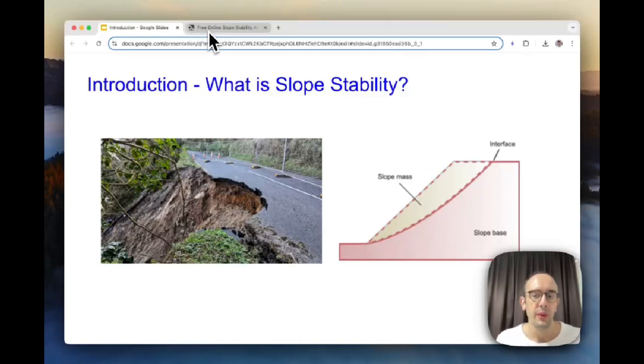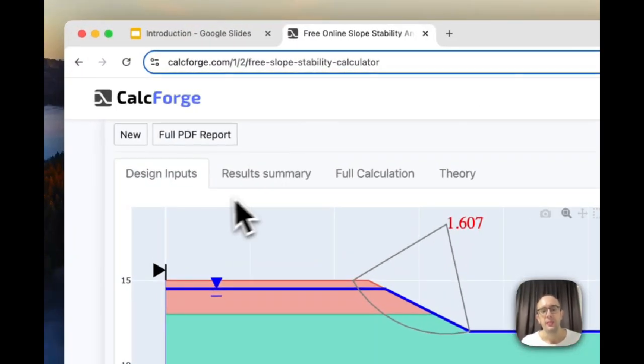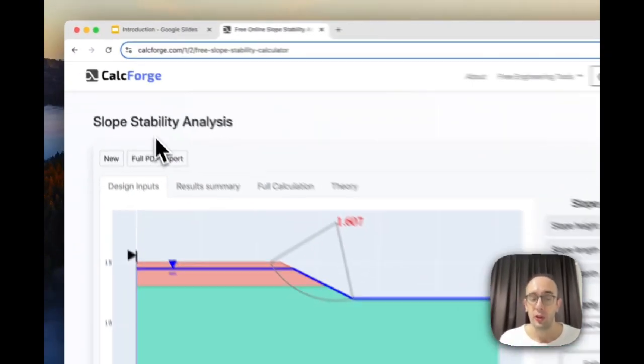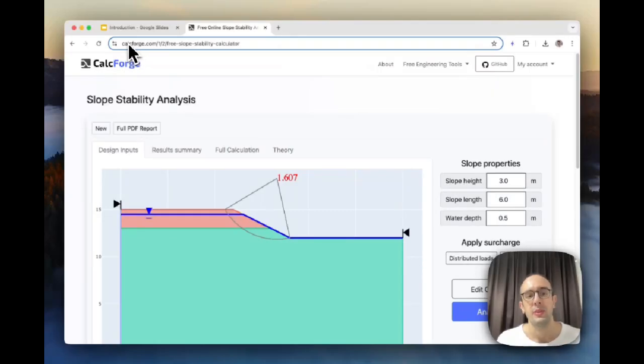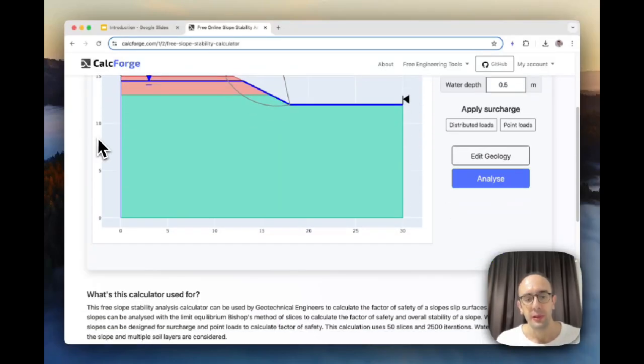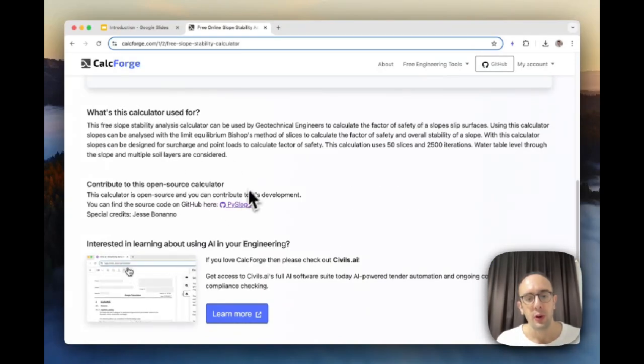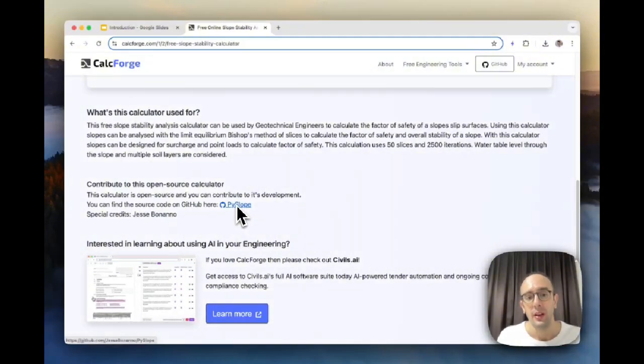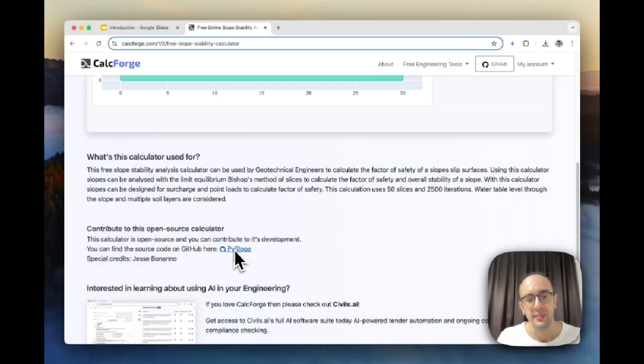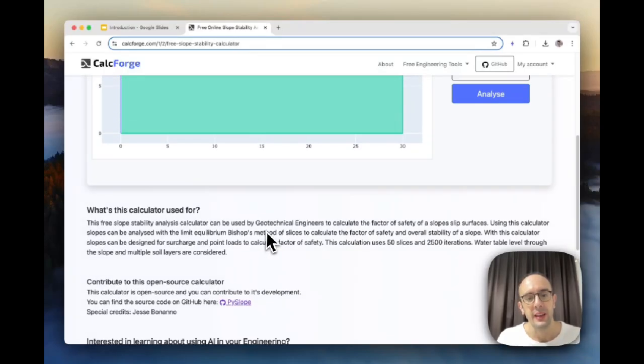But what we can do as geotechnical engineers is we can do this by hand or we can use software. So here what I'm going to show you is some free open source software that you can use to run these calculations. If you go to www.calcforge.com you'll see here we have this module for slope stability analysis. It's completely free and open source. You can see the actual link to the source code. So it's a Python project. You can click that to go to the GitHub and see the code.